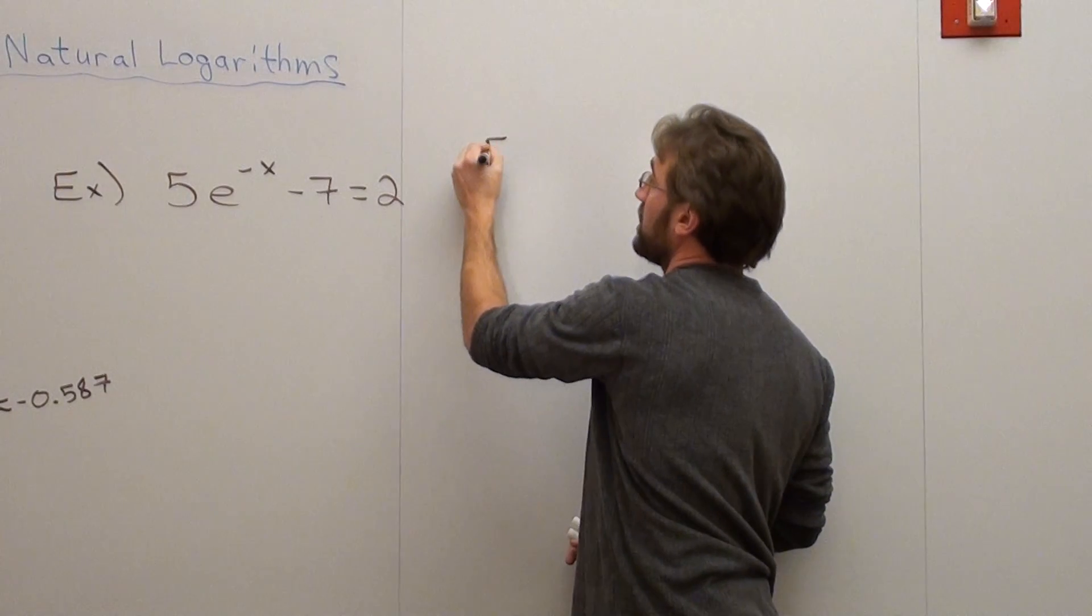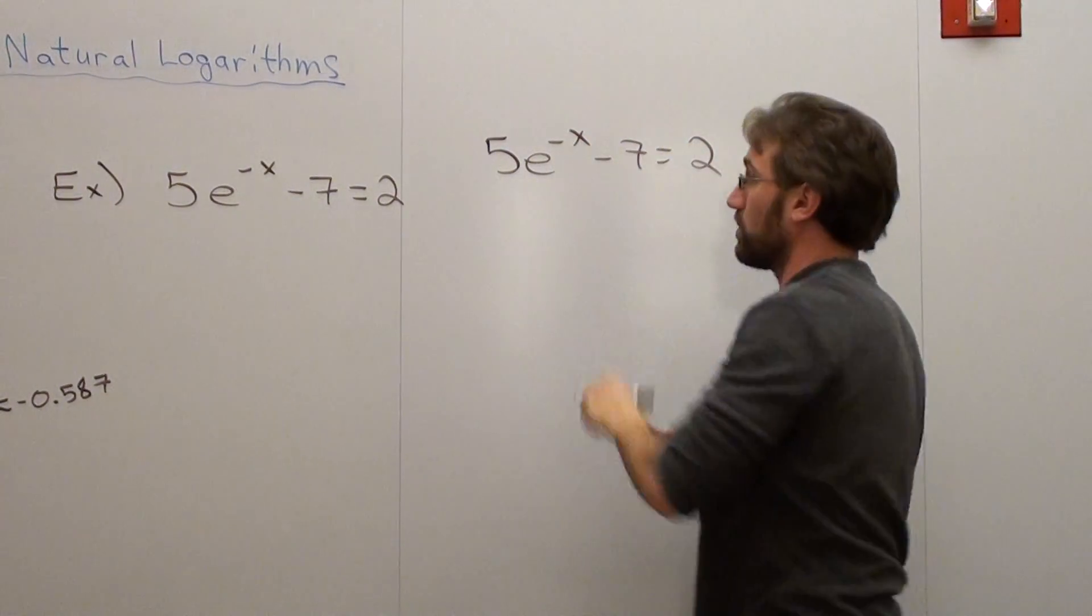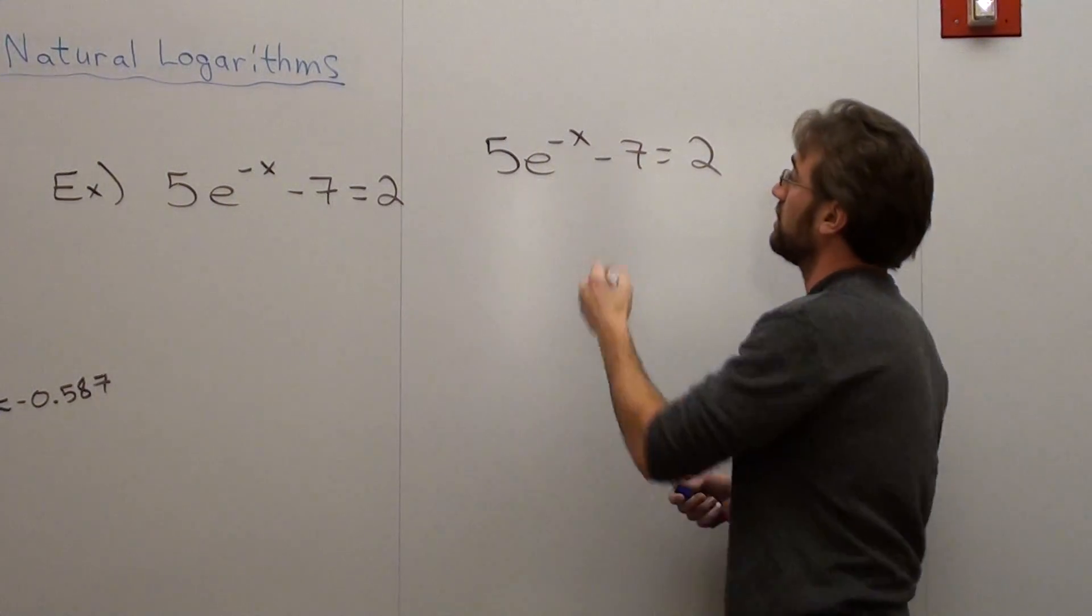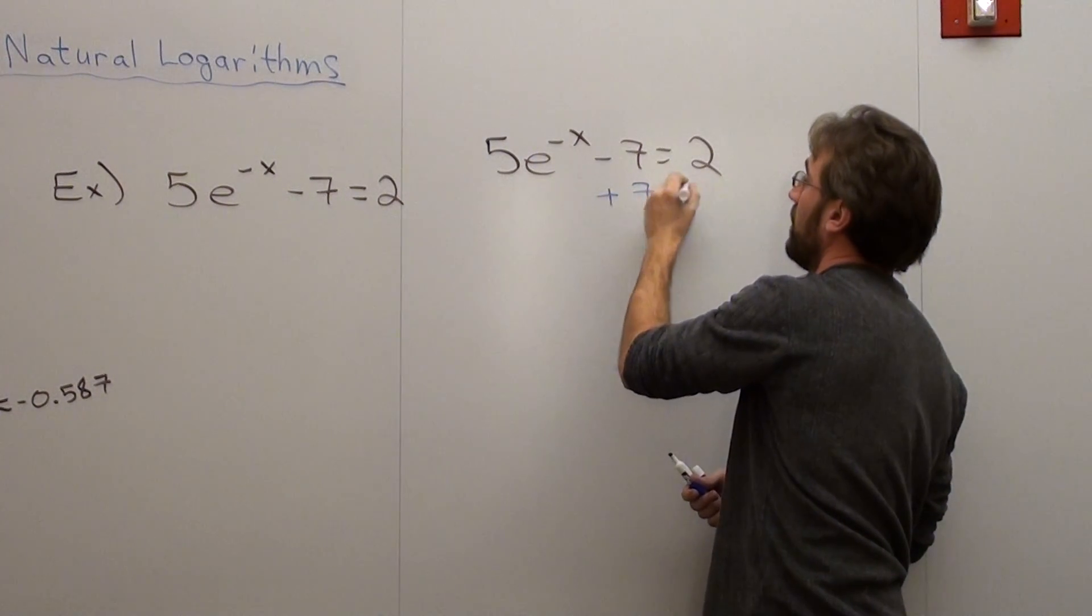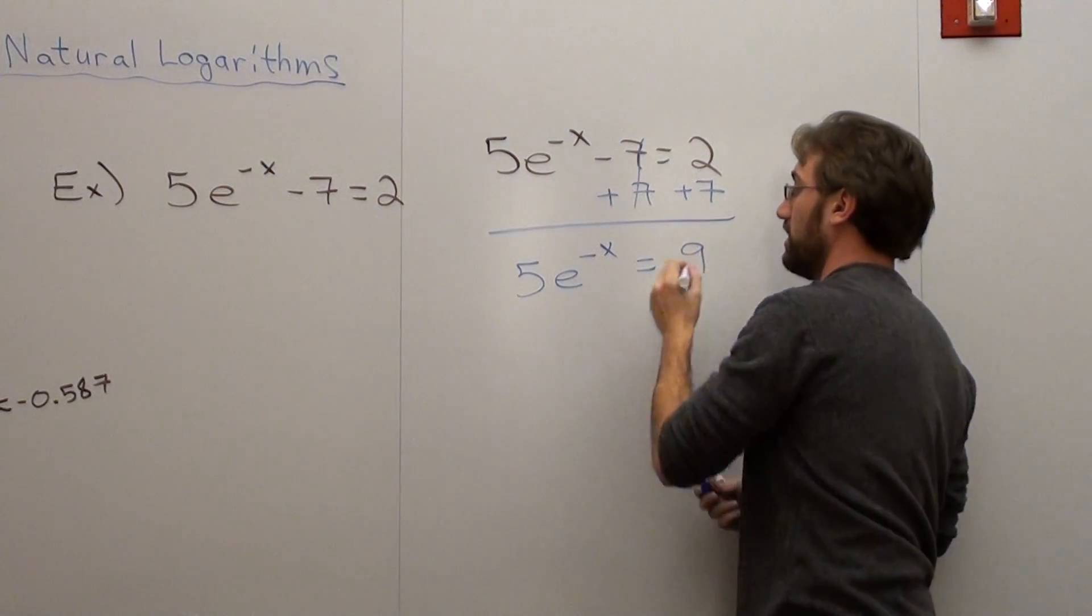So what I'm going to do is rewrite this problem and solve for x. So what I do is I add 7 to both sides. And when I do that, I get 5e to the negative x equals 9.